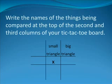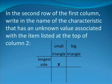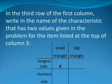Next, write the names of the things being compared at the top of the second and third columns of your tic-tac-toe board. The second column name should be the name of the object that has an unknown value associated with it, and the third column should be the name of the object for which you were given values for both characteristics. Your tic-tac-toe board should now look like this. In the second row of the first column, write in the name of the characteristic that has an unknown value associated with the item listed at the top of column 2. This leads to the following. In the third row of the first column, write in the name of the characteristic that has two values given in the problem for the item listed at the top of column 3. This leads to the following.